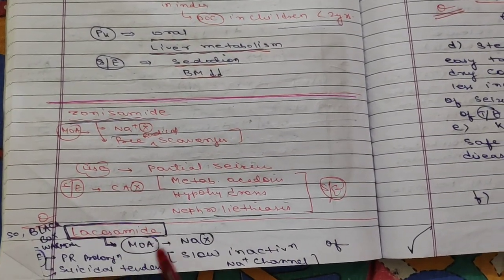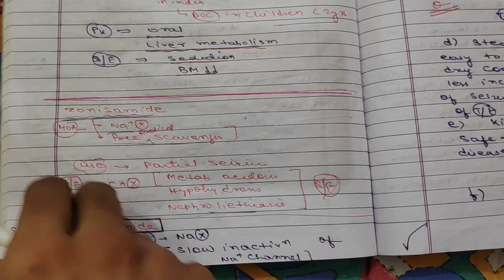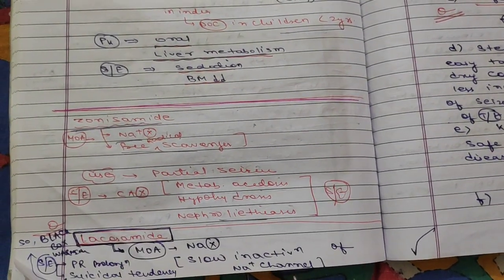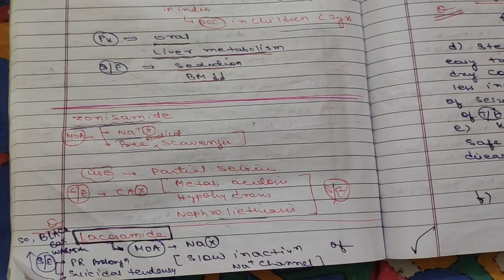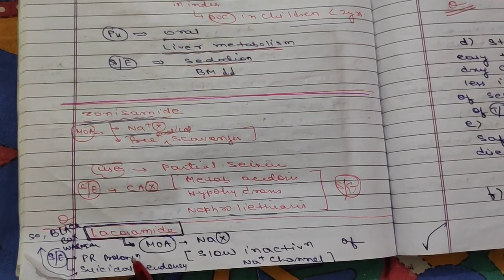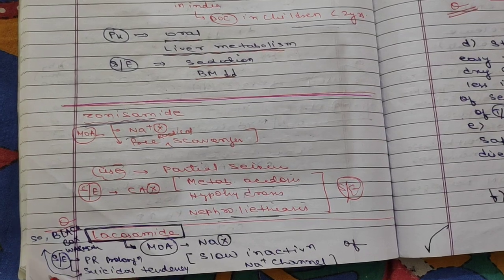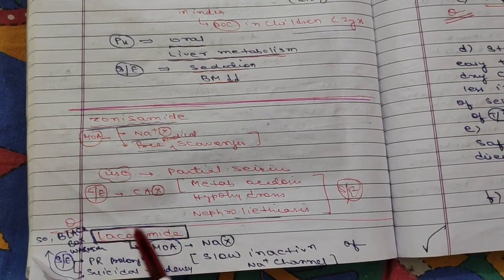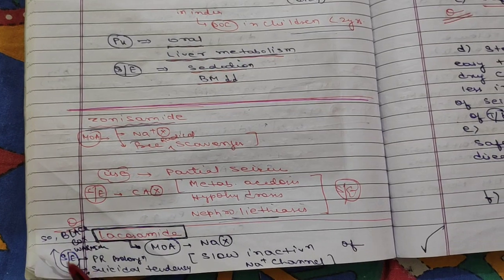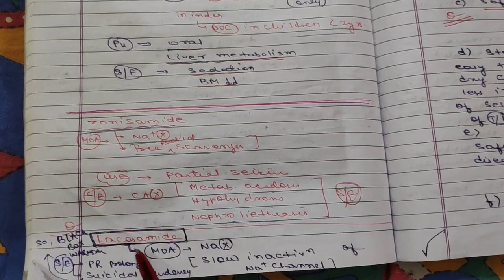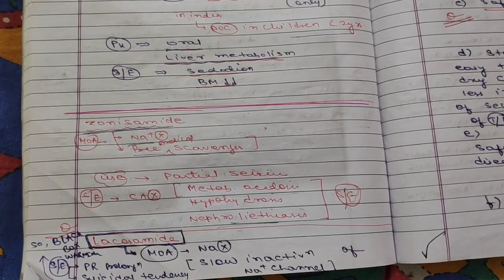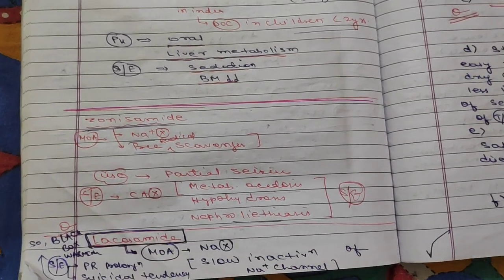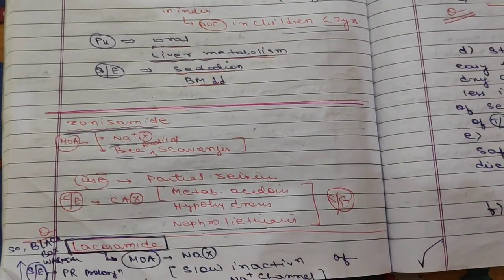The last drug is lacosamide. Its mechanism is sodium channel inhibition causing slow inactivation of the sodium channel. Side effects include PR interval prolongation and suicidal tendency. Because of the suicidal tendency, lacosamide is included under the black box warning — this is an important point to remember.